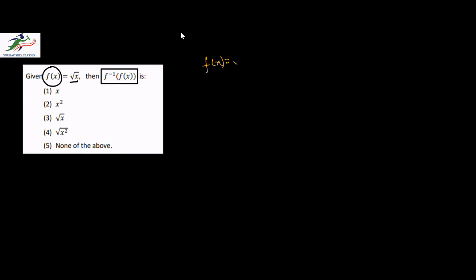In the next question we are given the function f(x) equal to root over x, and we are asked to find f inverse of f(x). Here we have f(x) equal to root over x, that means x is equal to f inverse of root over x, or f inverse of f(x). Therefore f inverse of f(x) is equal to x. So option one is the correct choice.